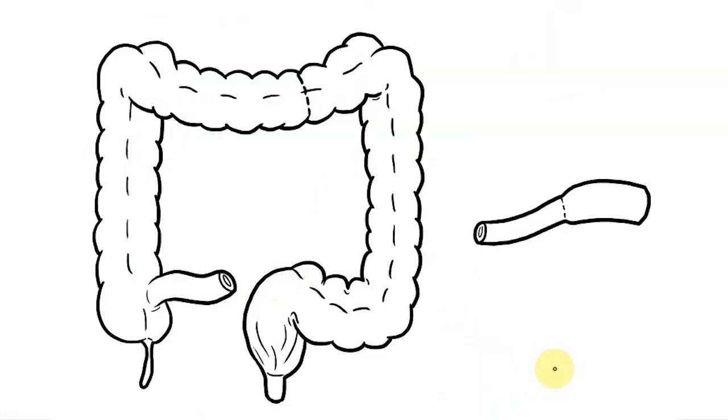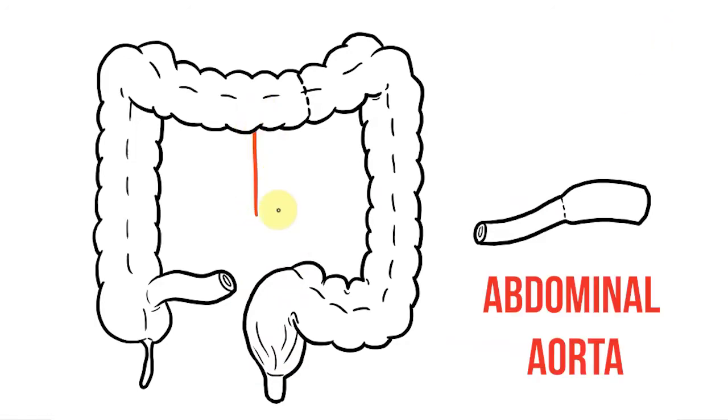So now let's draw out our vessels. All of the gut tube ultimately receives its blood supply from the abdominal aorta so I'll draw that in along here.